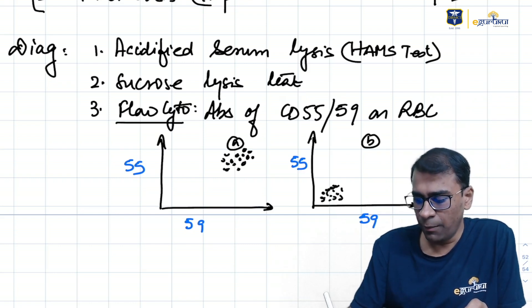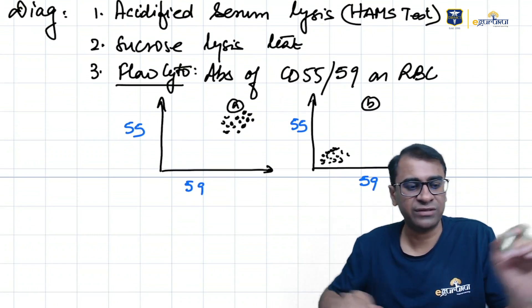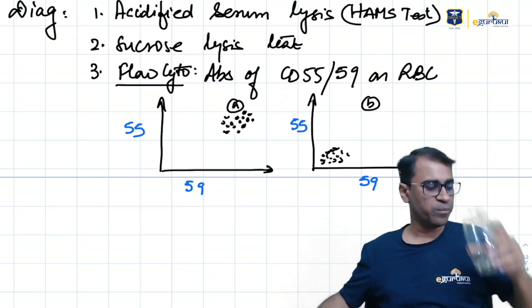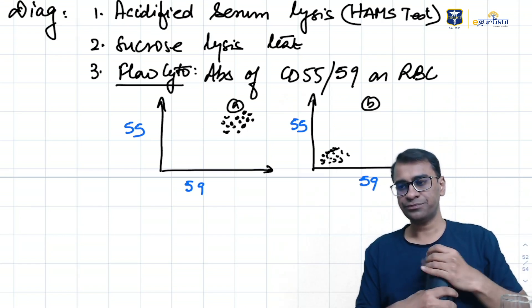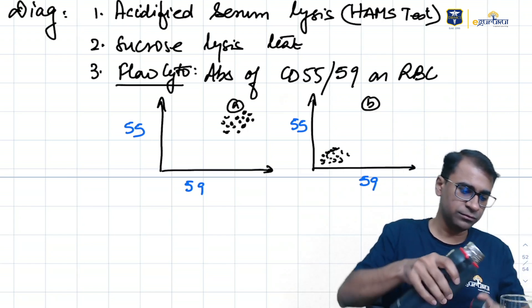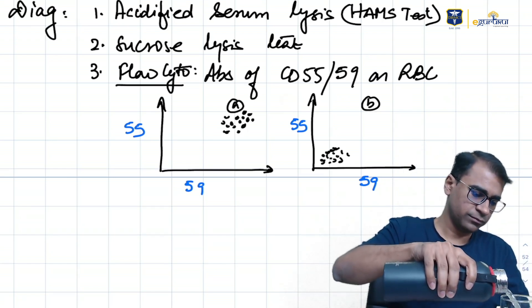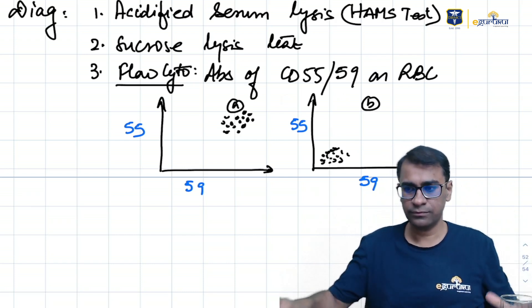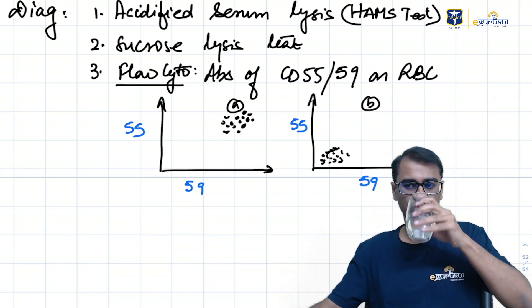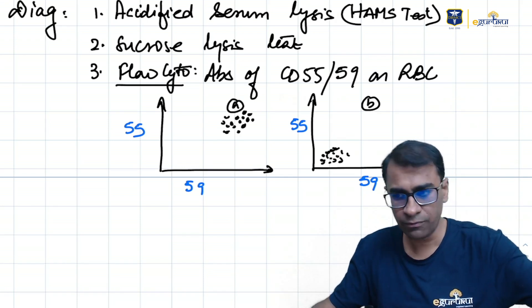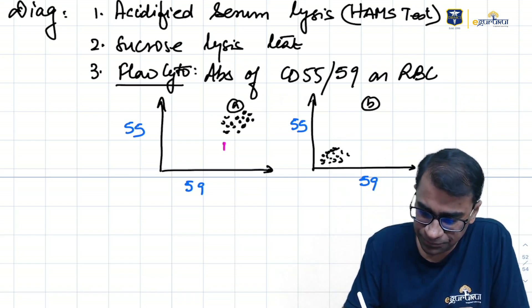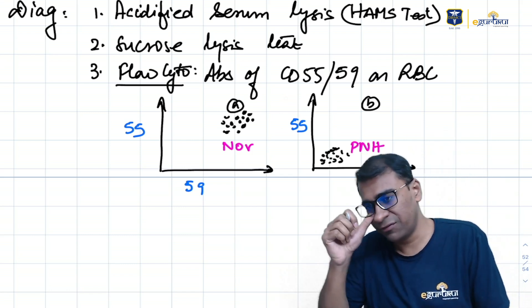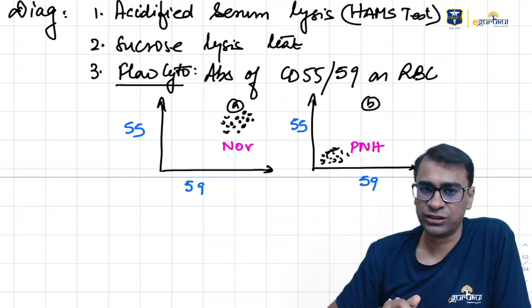In one of them, the cells are being seen here. Tell me, among this graph A and graph B, which of them is PNH? Very good. Look, A is normal, but this one is PNH because it is absence of 55-59. Therefore, graph B is PNH. Very good.